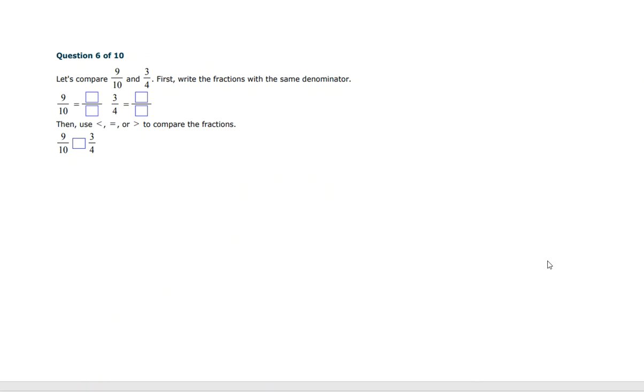Let's look at one more example here. Let's compare 9 tenths and 3 fourths. First, write the fractions with the same denominator. So remember, if you are comparing fractions and you want to keep them in fractions, you have to make equivalent fractions for them that have the same denominator. So our very first step in doing this is we want to find a common denominator between 10 and 4, which is our least common multiple.